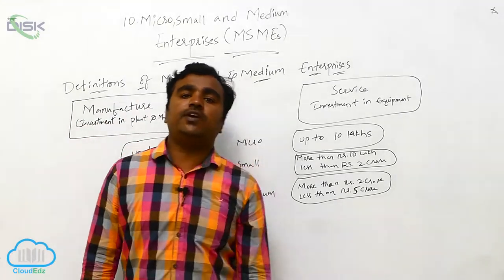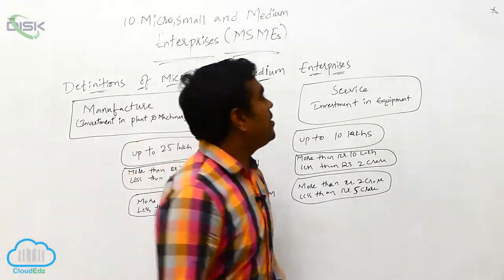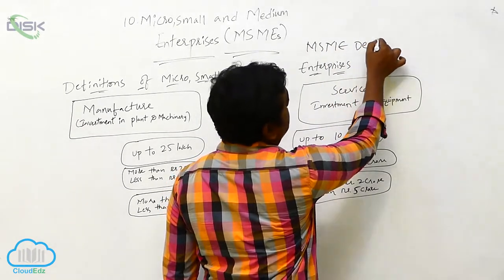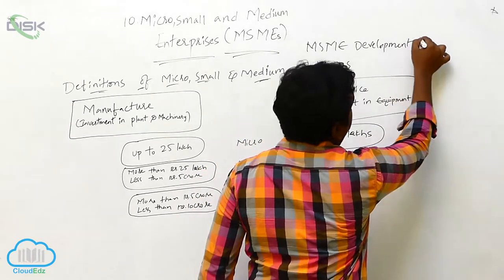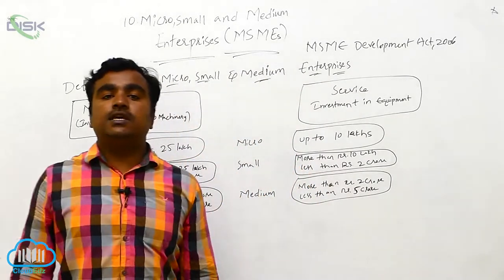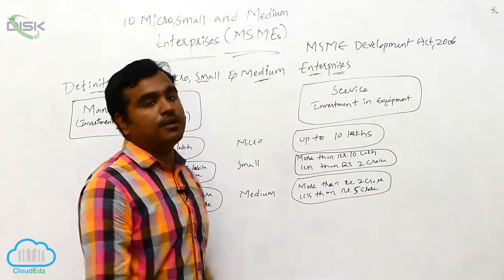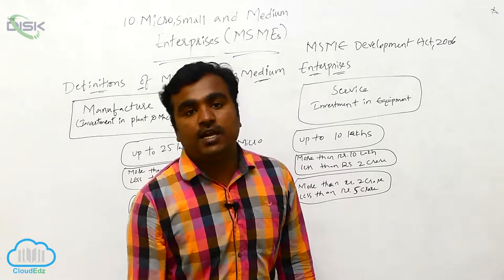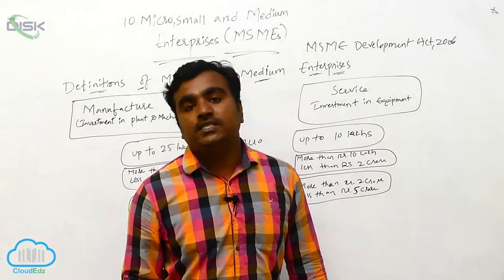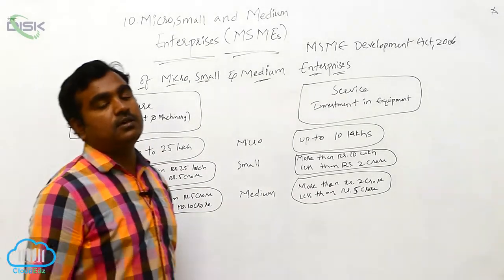A classification of MSMEs. The MSME Development Act 2006 has given some provisions under which MSMEs are classified into two types: manufacturing enterprises and service enterprises.